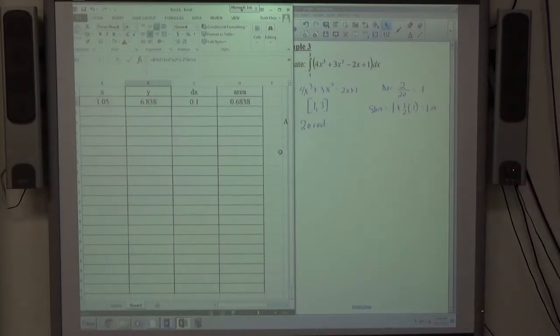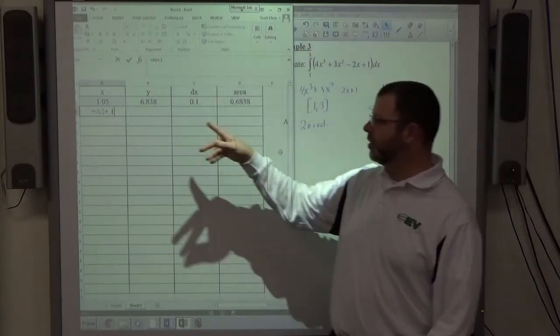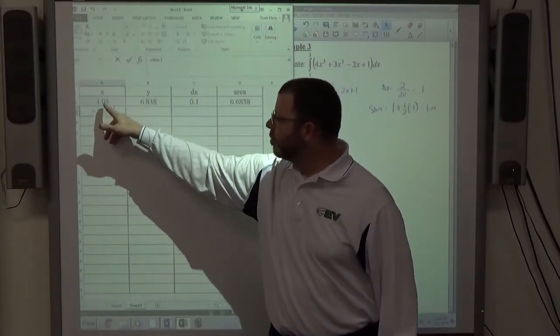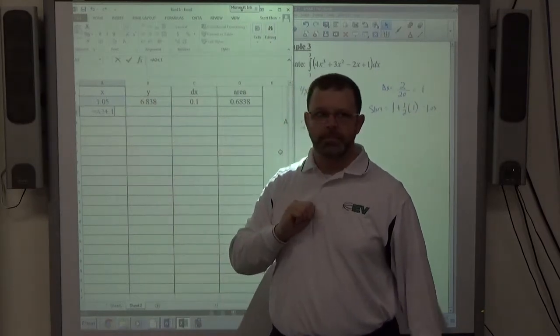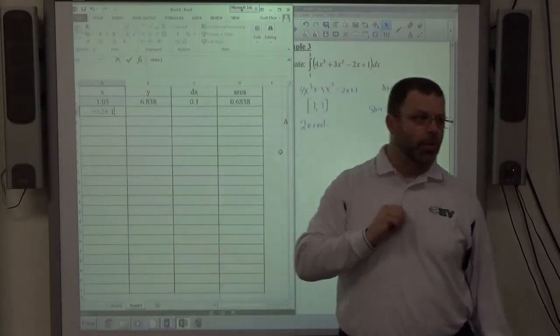And again, all I've got to do is figure out the next X, and we do that by evaluating the previous X plus the delta X value, which is 0.1. That's the formula—it's always equals whatever that is plus that.